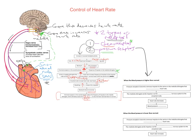When blood pressure is higher than normal, pressure receptors transmit a nervous impulse to the centre in the medulla oblongata that reduces heart rate. The medulla oblongata then sends impulses via the parasympathetic nervous system to the sinoatrial node. This causes heart rate to decrease, and as a result blood pressure falls back toward normal.